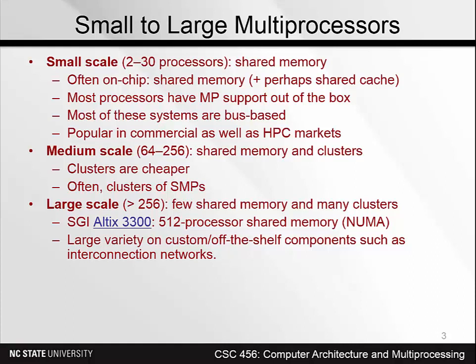Typical of these is the SGI Altix 3300, which is a few years old now, but it's a 512-processor shared memory machine. NUMA — non-uniform memory access — means you can access local memory very quickly, but accessing non-local memory takes a little bit longer. These are interconnected by a large variety of components.